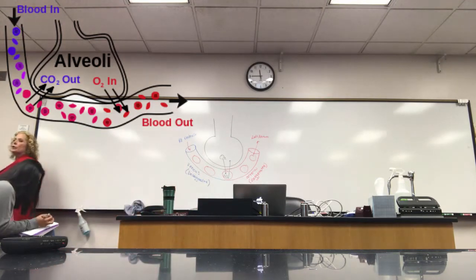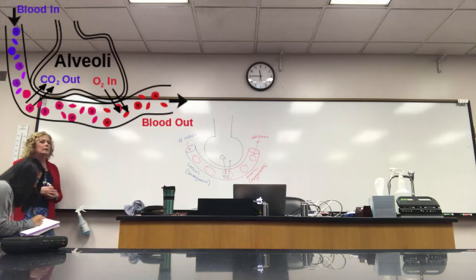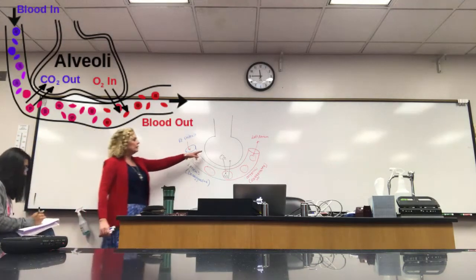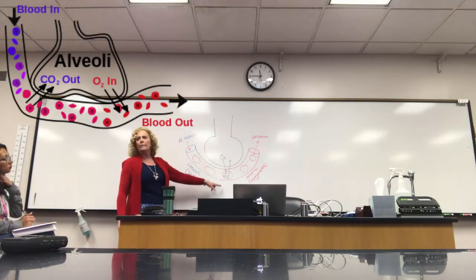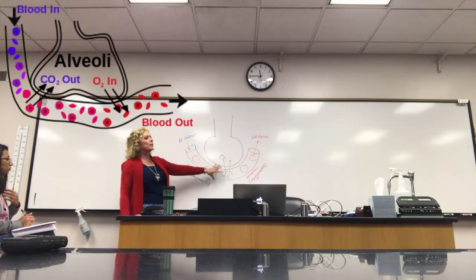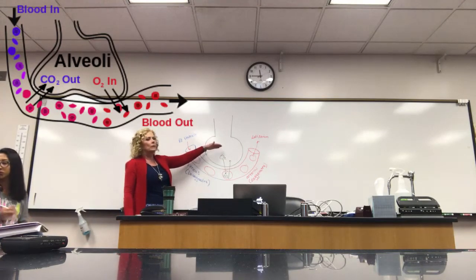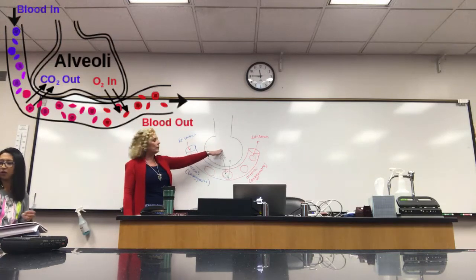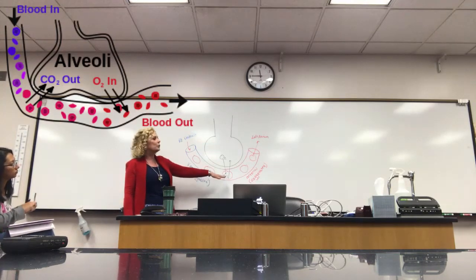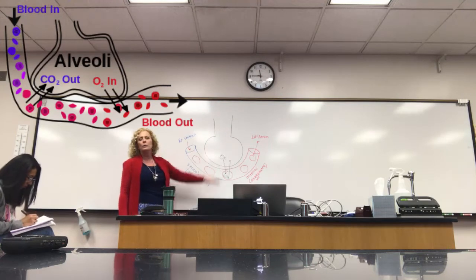Now, oxygen and carbon dioxide, as they are leaving and entering this alveoli, they're just moving by simple diffusion. So oxygen moves from simple diffusion from the alveoli to the blood, and CO2 is simple diffusion from the blood to the alveoli.